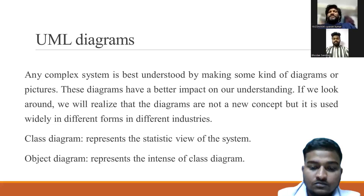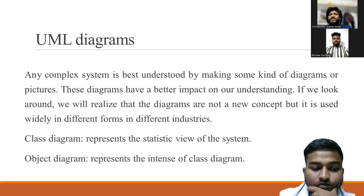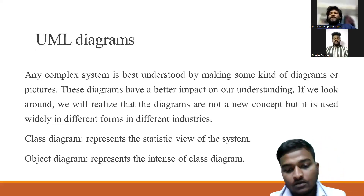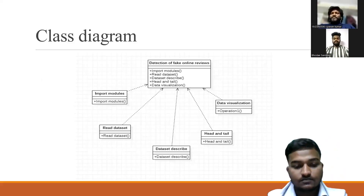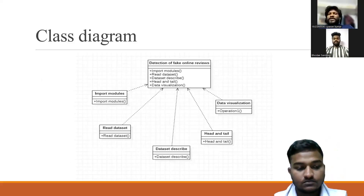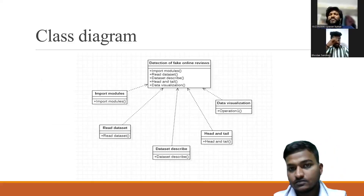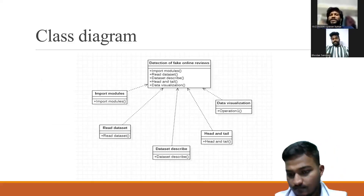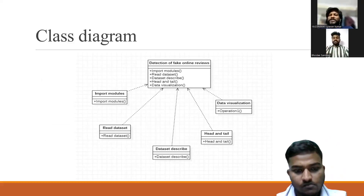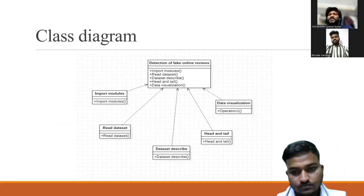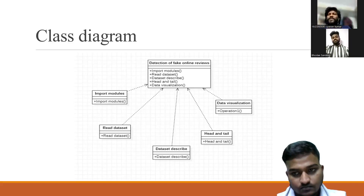The class diagram represents a static view of the system. The object diagram represents the instances of this diagram. In the class diagram for detection of fake online reviews, it first imports the modules and reads the datasets, describes the datasets, differentiates the data, and produces the final review output showing fake and truthful reviews.